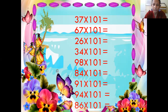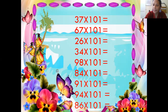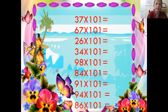Now you have to do these questions. Look at the screen. All these numbers are two-digit numbers which you have to multiply by 101: 37, 67, 26, 34, 98, 84, 91, 94, 86. You can write down the answers yourself — simply write down all these numbers twice and you will get the answers. Try it on your phone, and you can check with the help of a calculator also.